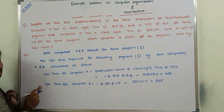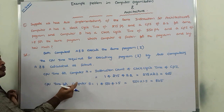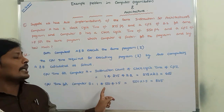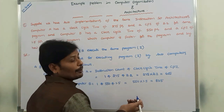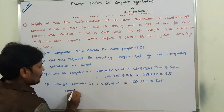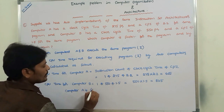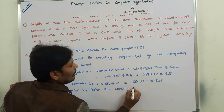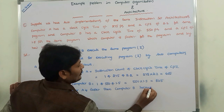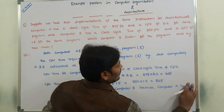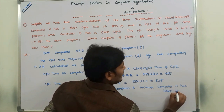By comparing the CPU time of Computer A and Computer B: Computer A has a CPU time of 605 picoseconds, and Computer B has a CPU time of 825 picoseconds. Since 605 is less than 825, Computer A has lesser CPU time. Therefore, Computer A is faster than Computer B.